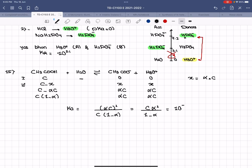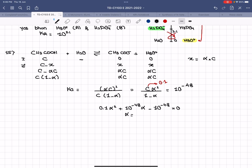C is 0.1, so you have an equation with only one unknown, which is alpha. It's 0.1 alpha squared. You bring it to this side: 0.1 alpha squared plus 10 to the negative 4.8 alpha minus 10 to the negative 4.8 equals 0. Solve the quadratic equation and find alpha, which is equal to 0.01258.